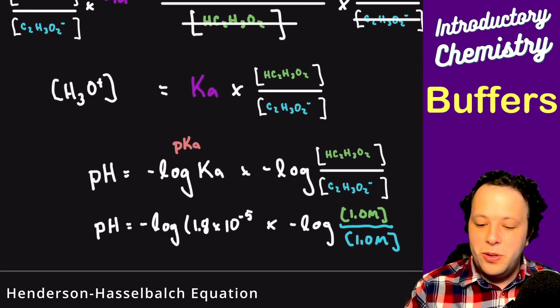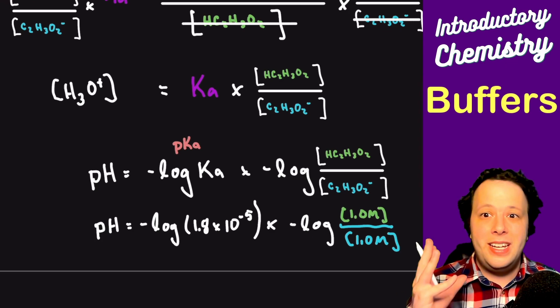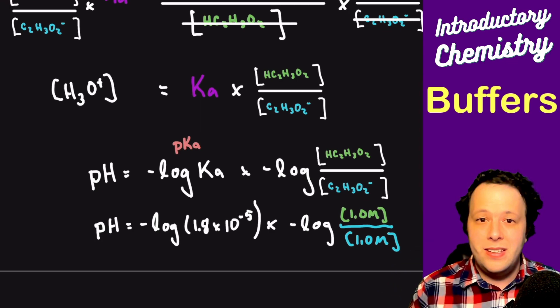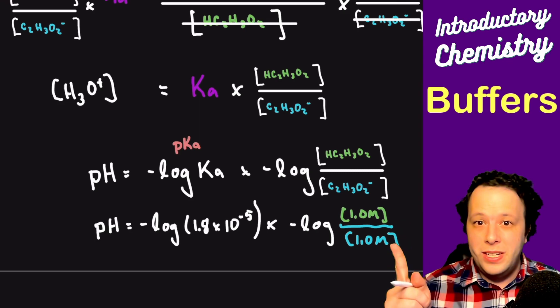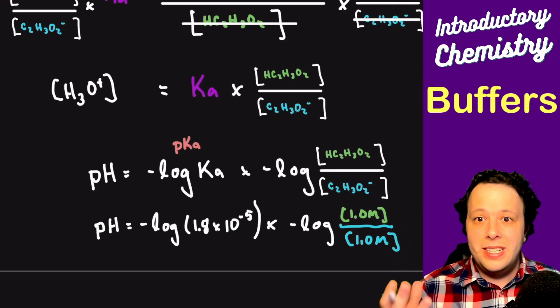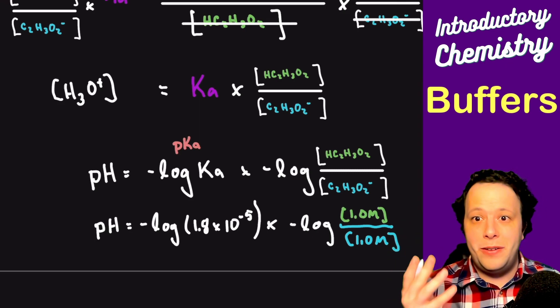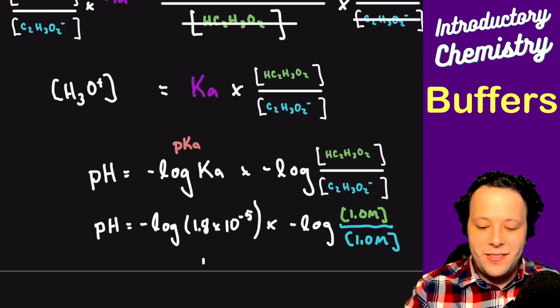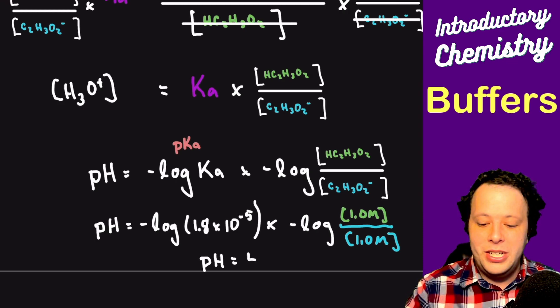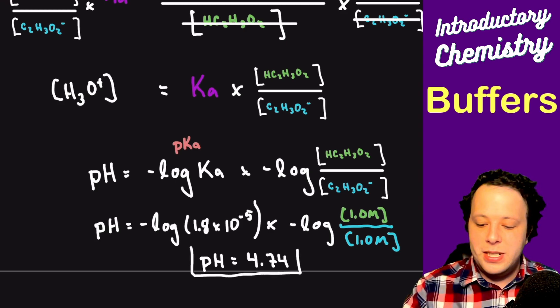The whole thing is that number over there is going to end up canceling out. Once we put all this into our calculator by taking the negative log of 1.8 times 10 to the negative 5, times it by the negative log of 1 divided by 1, what we're going to get is the pH of where this buffer works, which is a pH of 4.74.